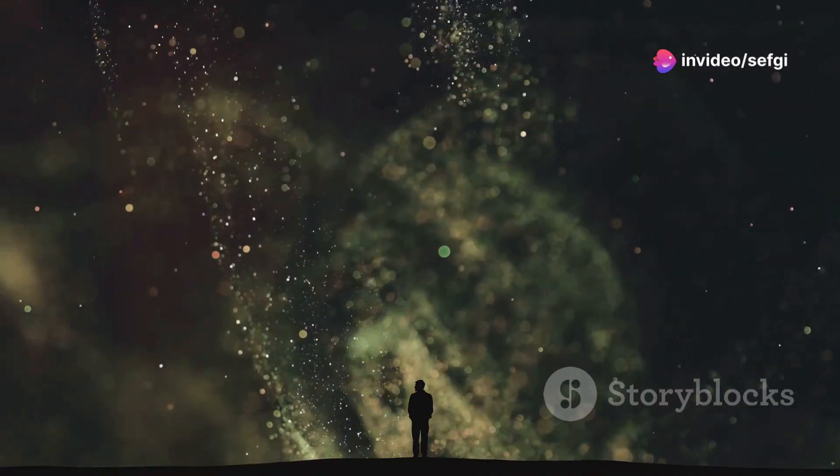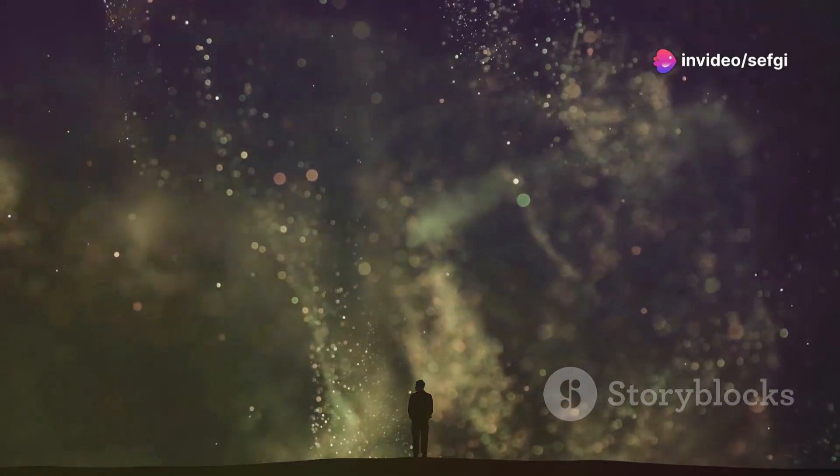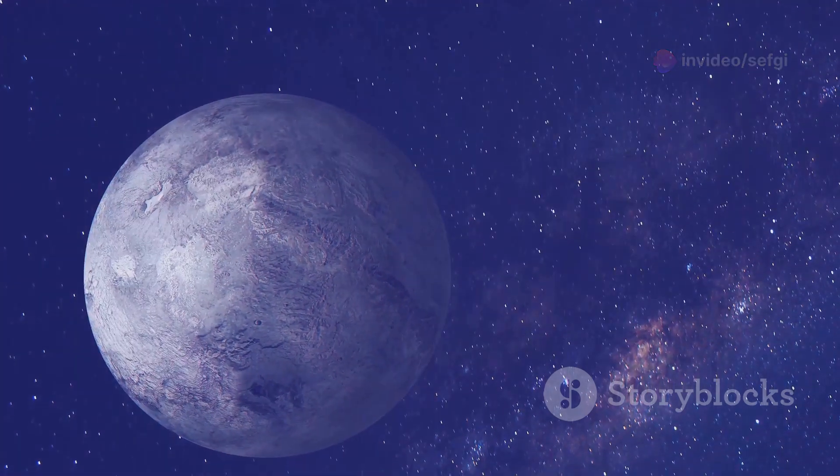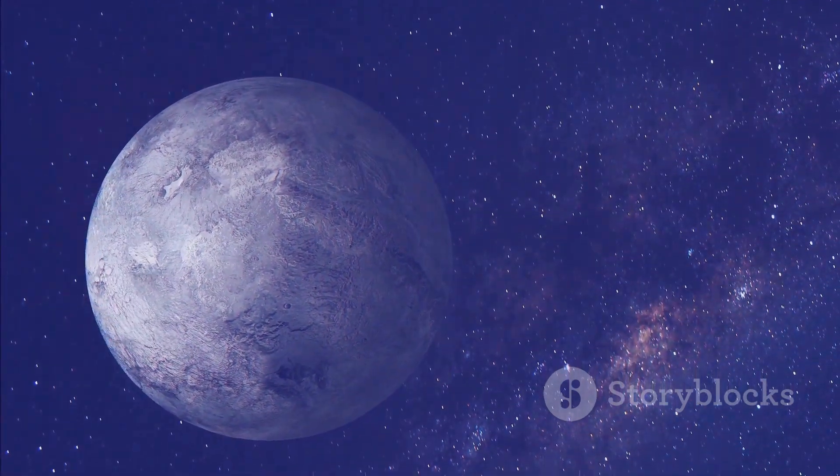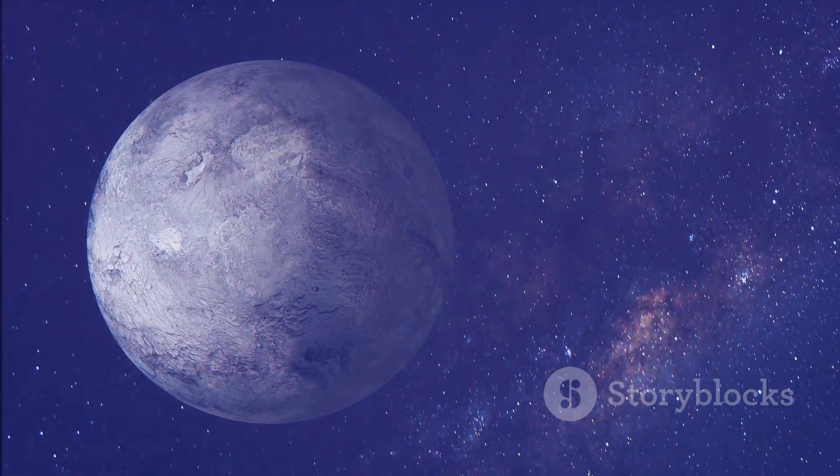Have you ever gazed at the night sky, awestruck by the sheer number of stars? Each twinkling point of light represents a distant sun, possibly orbited by its own planets.